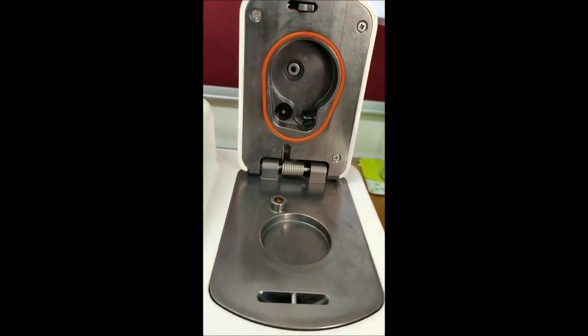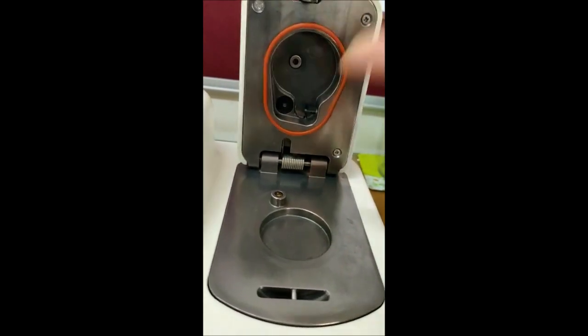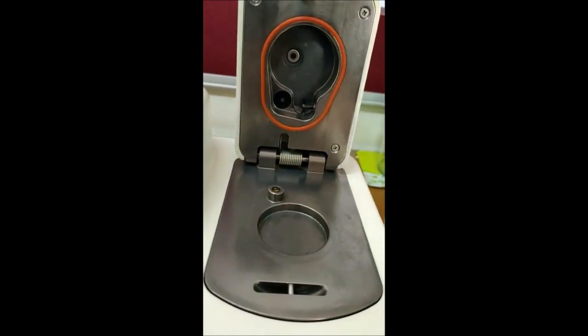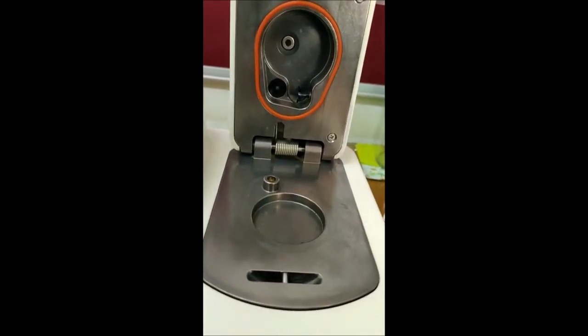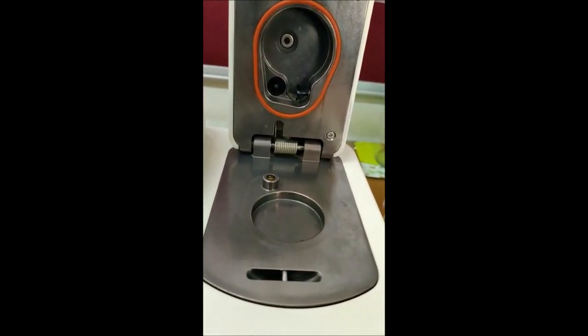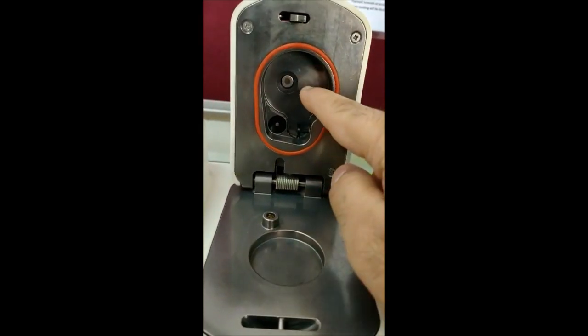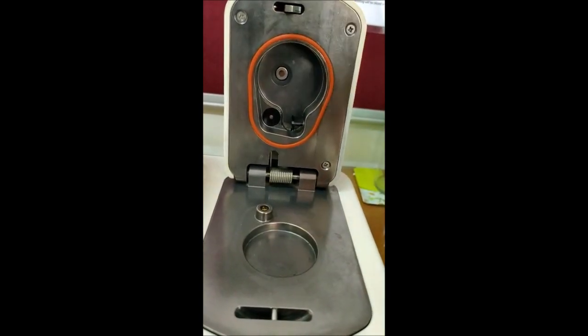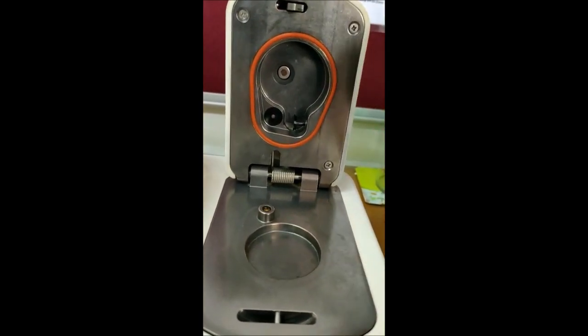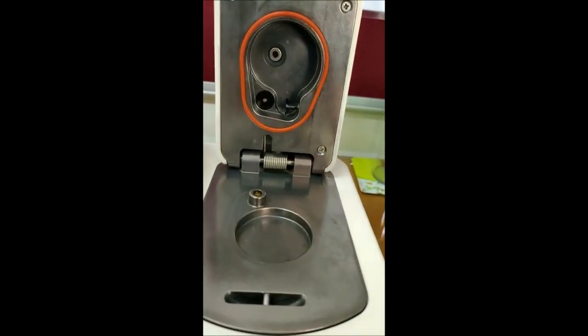To measure the dew point we have this optical sensor which is throwing infrared light to this. And when the condensation happens on the mirror it will exactly note the dew point temperature. This is the thermopile which is going to measure your sample temperature. And the small fan here is used to circulate air which will enhance the rate of equilibrium.